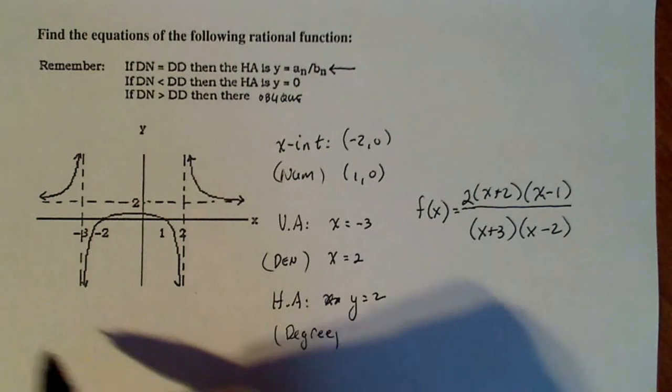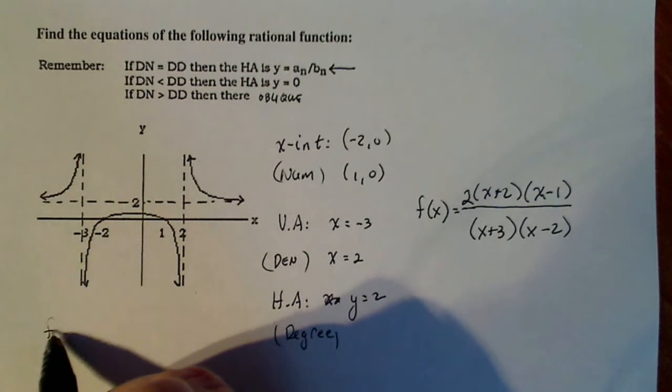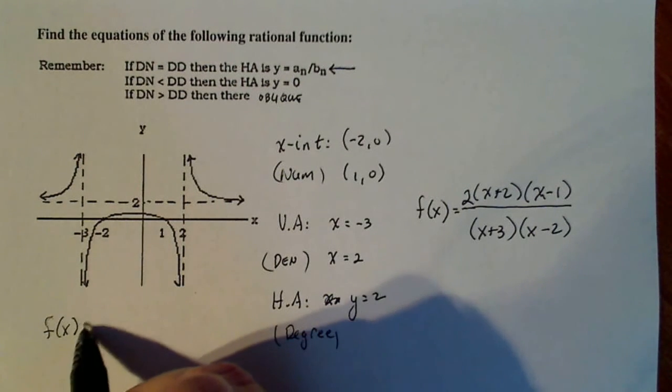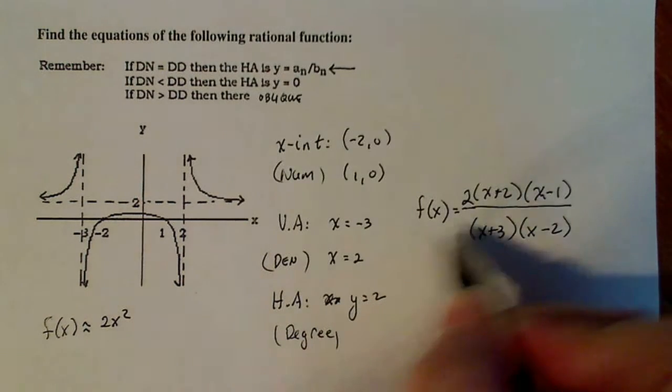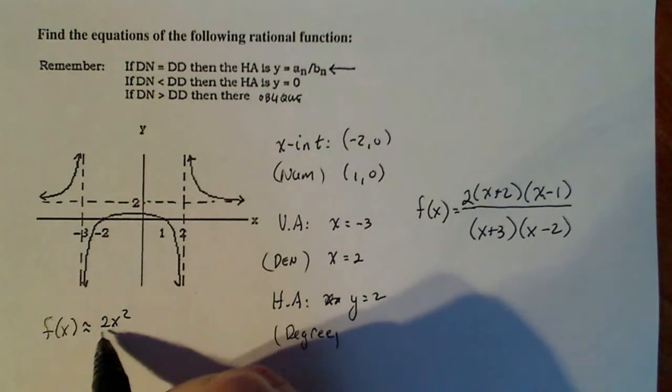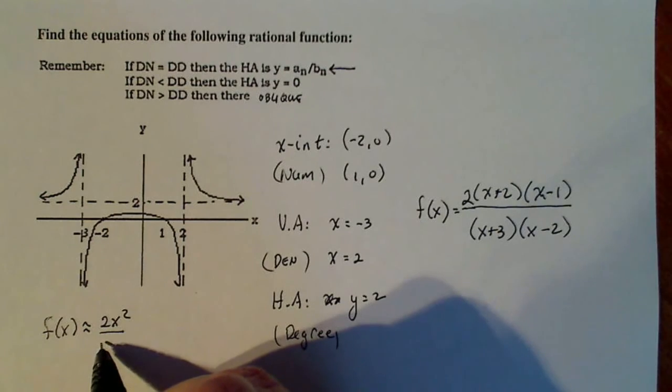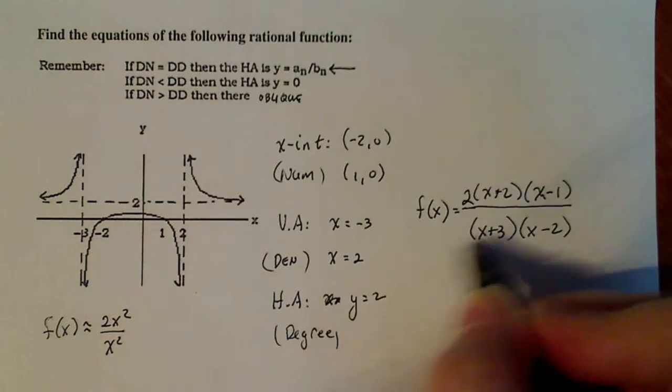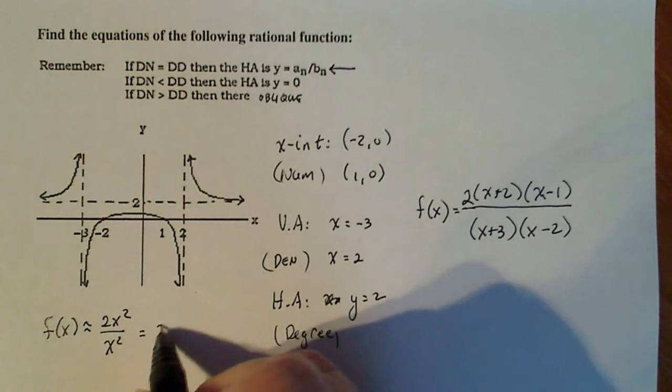And then I'll come over here and I'll just say my ratio of leading terms, f of x is approximately equal to two x squared in the numerator—two x squared, that's the highest degree term—and the denominator just x squared. And that's going to give me the two that I want.